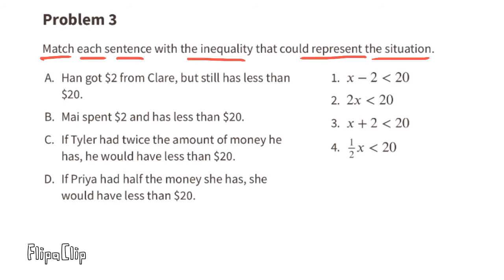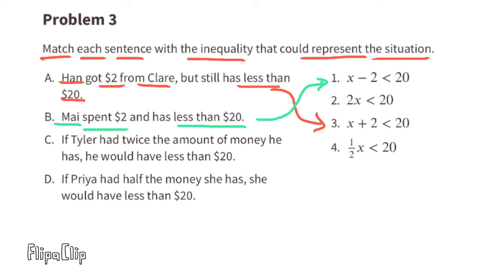Problem number three: match each sentence with the inequality that could represent it. Part a — Han got two dollars from Claire but still has less than 20 dollars. If x represents Han's original amount, then x plus 2 is less than 20 — that matches inequality 3. Part b — My spent two dollars and has less than 20 dollars, so x minus 2 is less than 20 — that matches inequality 1.